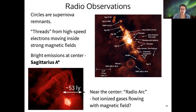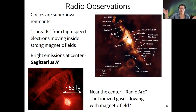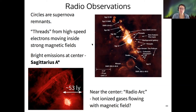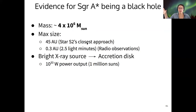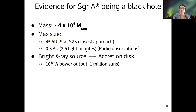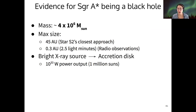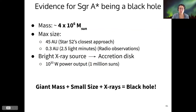If you go really close to the center, within less than a hundred light years, there's a radio arc that kind of curves around. These are possibly hot ionized gases flowing along a magnetic field, which is again suggestive of potentially accretion. If we look at all this evidence together, we have a 4 million solar mass object. We can figure out its maximum size based on star S2's orbit and also based on radio observations. We see a bright X-ray source suggesting an accretion disk, and its total power output is about 1 million suns worth of power. The huge mass, the small size, and the X-ray radiation — all of the evidence suggests that this is a supermassive black hole.